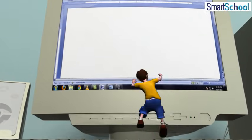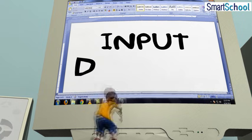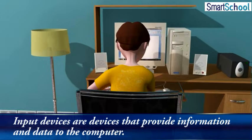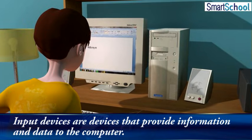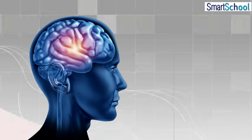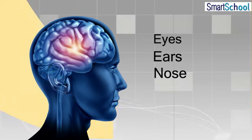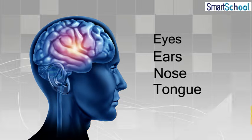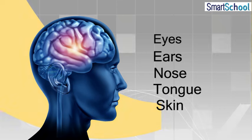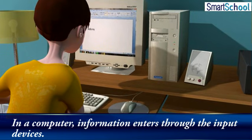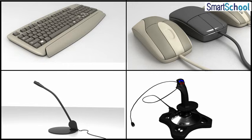Input Devices are devices that provide information and data to the computer. For instance, in the human body, information enters the brain through eyes, ears, nose, tongue and skin. In a computer, information enters through the input devices. Some common input devices are given below.